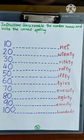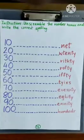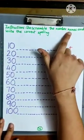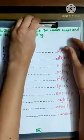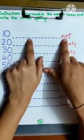Today, we are going to solve page number 76 from which book? Maths Workbook. Instructions: Unscramble the number names and write the correct spelling. We are going to write the correct spelling of the number name.